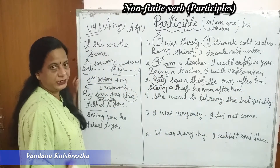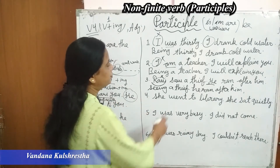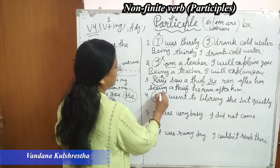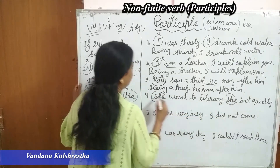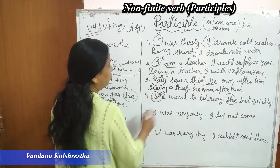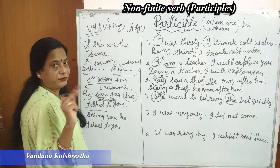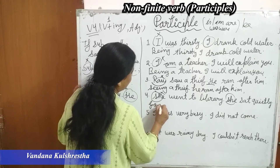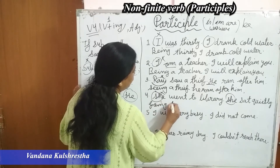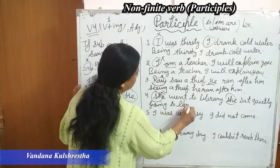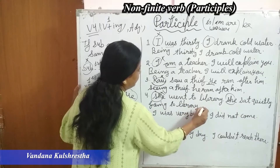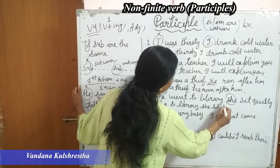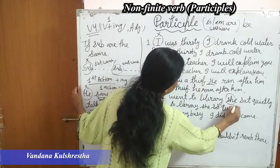Next: 'She went to the library / She sat quietly.' Subject is the same — 'she' appears in both. We remove the first 'she' and convert 'went' to first form 'go' plus -ing. Result: 'Going to the library, she sat quietly.'